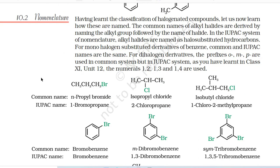10.2 Nomenclature. Having learned the classification of halogenated compounds, let us now learn how these are named. The common names of alkyl halides are derived by naming the alkyl group followed by the name of halide. In the IUPAC system of nomenclature, alkyl halides are named as halo-substituted hydrocarbons. For monohalogen-substituted derivatives of benzene, common and IUPAC names are the same. For dihalogen derivatives, the prefixes ortho, meta, para are used in common system, but in IUPAC system the numerals 1,2; 1,3; and 1,4 are used.